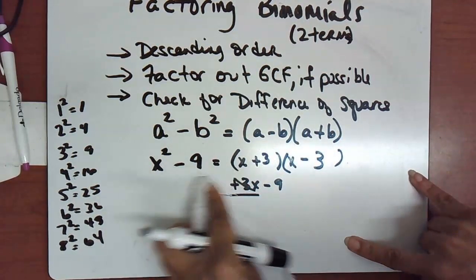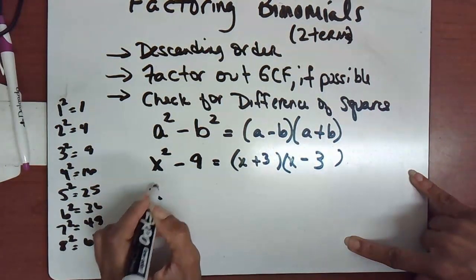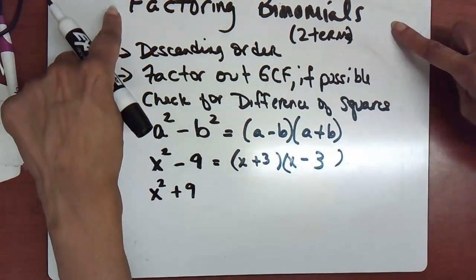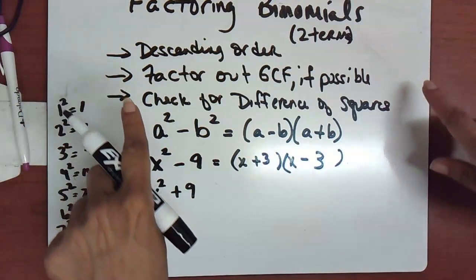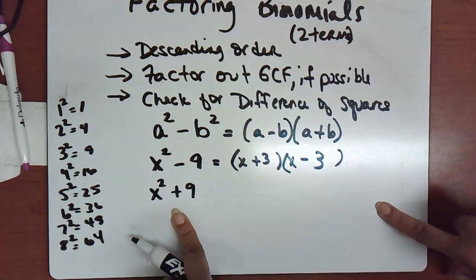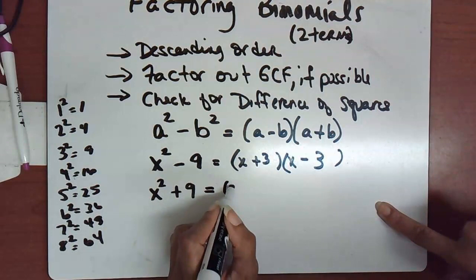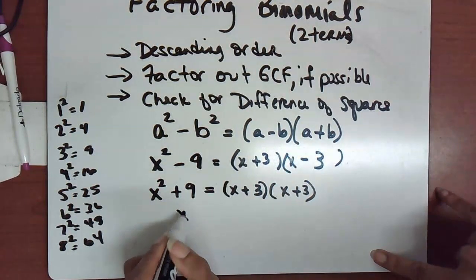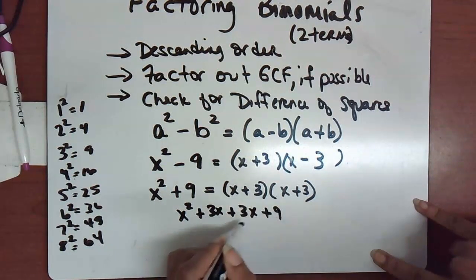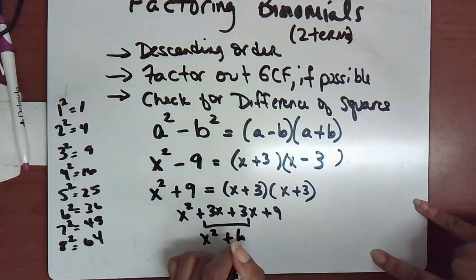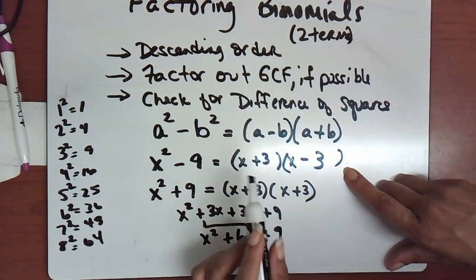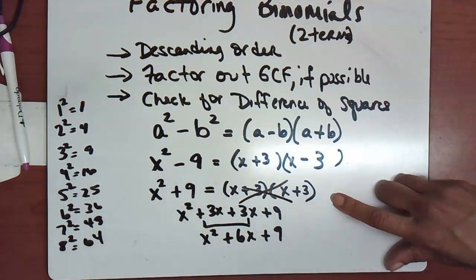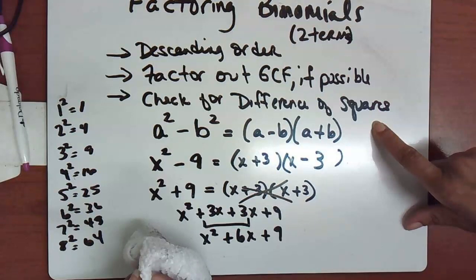What happens if you try to factor x² + 9? Going through the rules: it's in descending order, there's no GCF, and checking for difference of squares — it's not a difference, it's a sum of squares. You cannot factor the sum of squares. If you tried (x + 3)(x + 3), you still end up with a middle term, so it doesn't multiply back to the original. x² + 9 is not factorable at all.